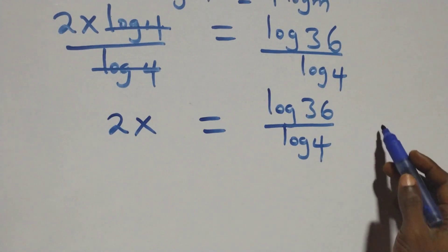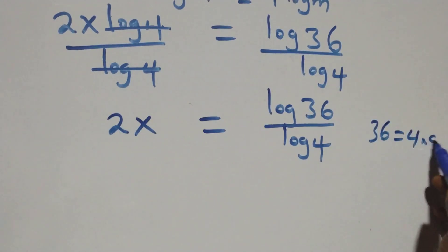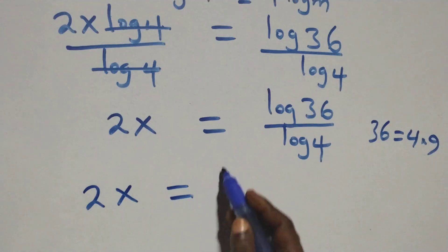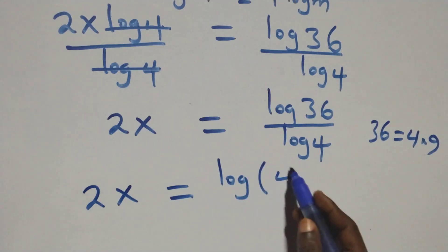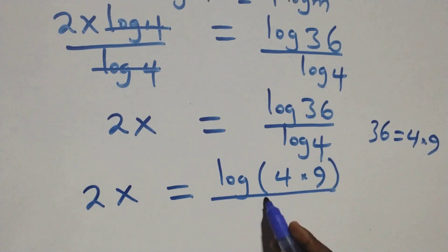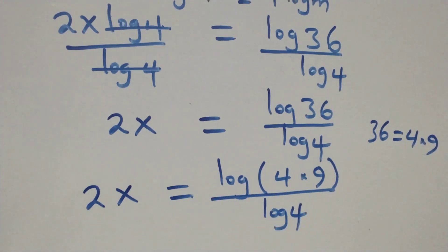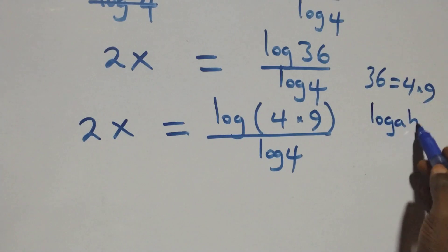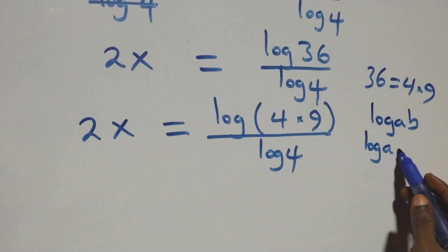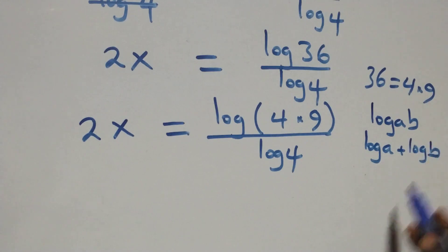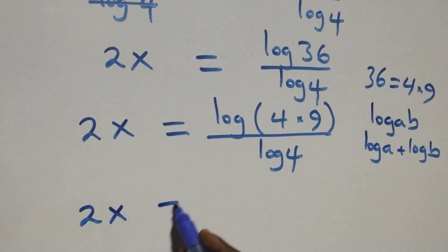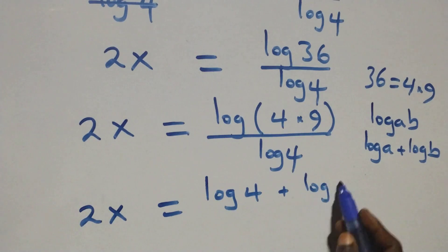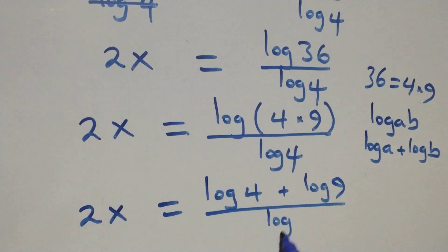The next step, we can write 36 as 4 times 9. This equation becomes 2x equals to log of 4 times 9, over log 4. Then, from the law of logarithms, all we have here becomes 2x equals to log 4 plus log 9, over log 4.